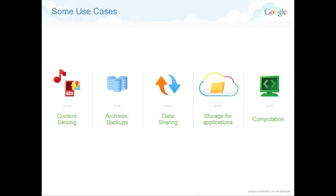If you make the file public, people can download it directly. Because we have what we call an edge cache at Google — thousands of network infrastructure points in the world — the first request will pull the file from the data center, which gets copied into our edge cache, and the next request will only go to the edge cache.